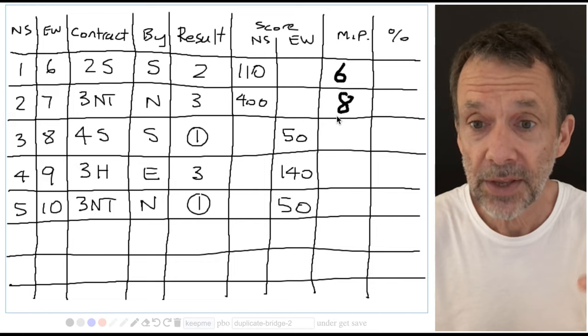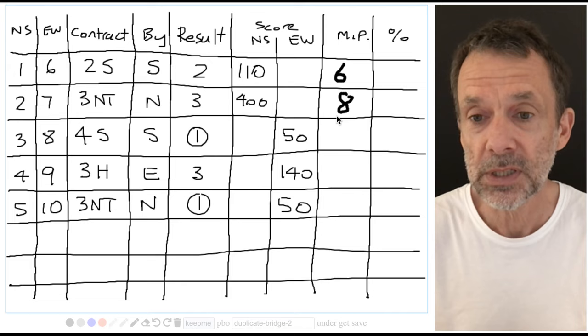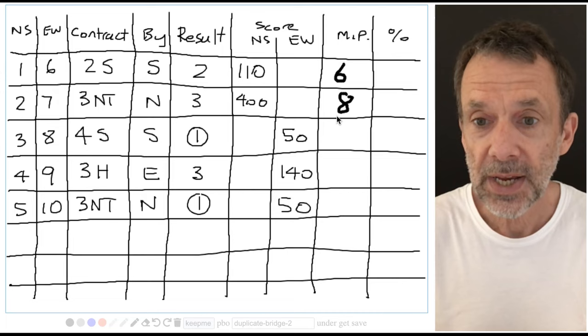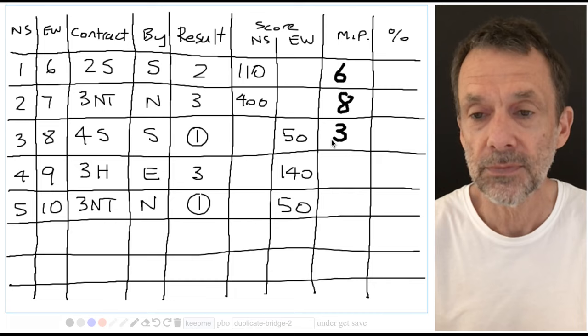So even though pair three were minus 50 in the score, that's still better than minus 140, which pair four scored. So north-south three win two match points for beating pair four. And north-south three tied with pair five. So that's another one match point. So two for the win, one for the tie, three match points for pair three.